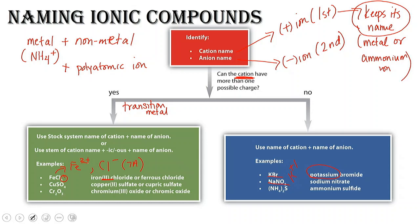The other older naming system — the 'ic' or the 'ous' — the 'ic' is the one that has the highest charge and the 'ous' is the one that has the lowest charge. And for our anion, we drop the ending and add 'ide'.